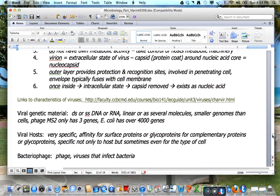Viral hosts are very specific because viruses have an affinity for surface proteins or glycoproteins. The complementary proteins or glycoproteins are specific not only to the host, but sometimes even for the cell type. Bacteriophage or phage is a virus that infects bacteria.